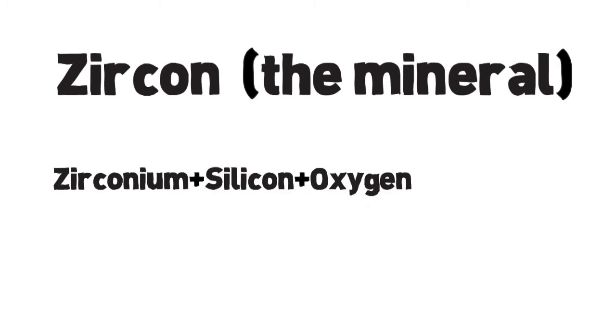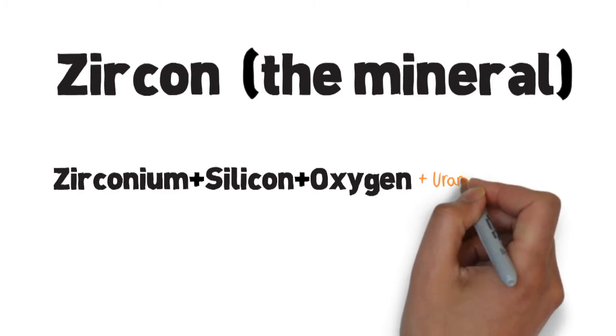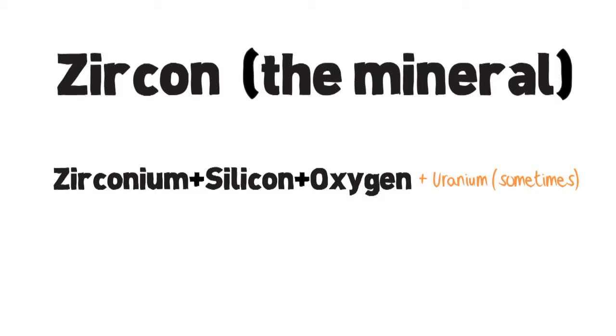It forms a lattice, and in that lattice it can substitute in uranium as a defect or replacement. That uranium starts out undecayed. And once the crystal's formed, it decays into lead. We know how long it takes for uranium to decay to lead. And since there was no lead in the crystal to start with, we can know very accurately how long this uranium has been decaying, and therefore how long it has been since the crystal was created.